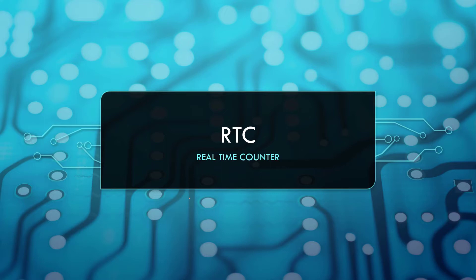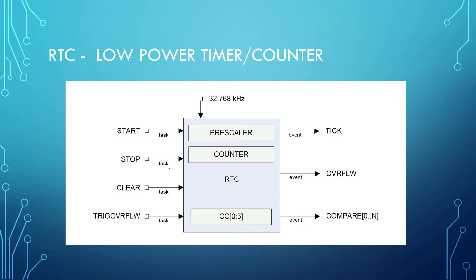RTC is basically the backend hardware which works under the application timers layer. Before we start programming the RTC module, let's look at its internal architecture. We have a prescaler, a counter, and four channels for compare operations. These channels work similarly to general purpose timers — each channel handles a separate comparison operation, and each operation can generate events.